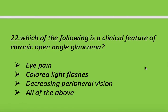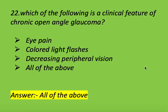Next question: which of the following is a clinical feature of chronic open angle glaucoma? Options: eye pain, colored light halos, decreased peripheral vision, and all of the above. Right answer is all of the above. Clinical features of chronic open angle glaucoma are eye pain, colored light halos, and decreasing peripheral vision.